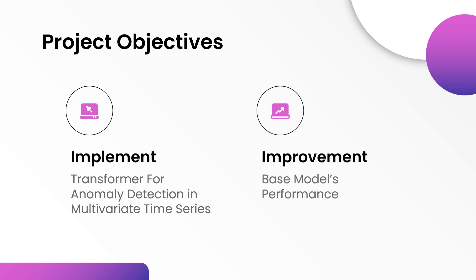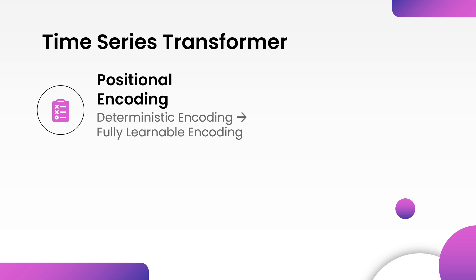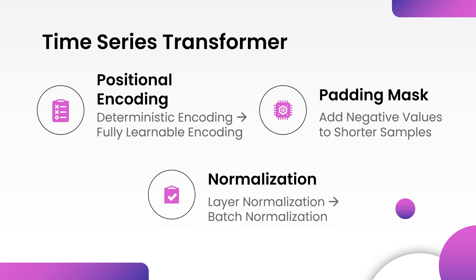This project also investigates ways to improve the base model performance. The core of the base model uses the original transformer encoder with some modifications and does not utilize the decoder. The first modification is to use fully learnable positional encoding instead of deterministic encoding, as it performs better for all selected datasets. Next, as individual samples may show significant length variation in time series data, a padding mask is generated to add significant negative values to shorter samples. Lastly, rather than using layer normalization, batch normalization is used to lessen the impact of outlier values in time series.